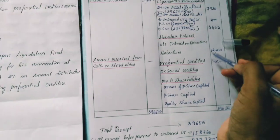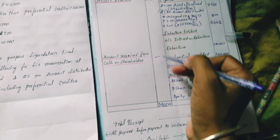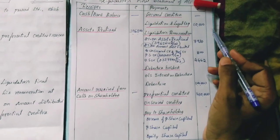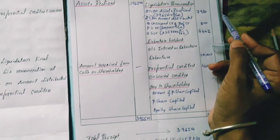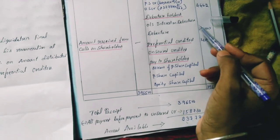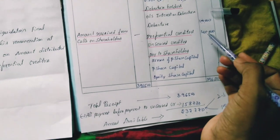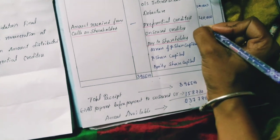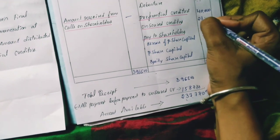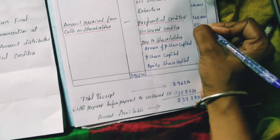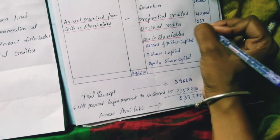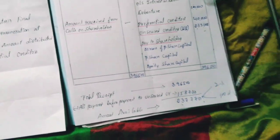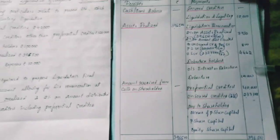The amount available for unsecured creditors is calculated as: Rs.3,96,500 minus Rs.10,000 (liquidation expenses) minus Rs.7,930 (remuneration on assets) minus Rs.800 minus Rs.4,662 (remuneration on unsecured creditors) minus Rs.1,00,000 (debentures) minus Rs.40,000 (preferential creditors).